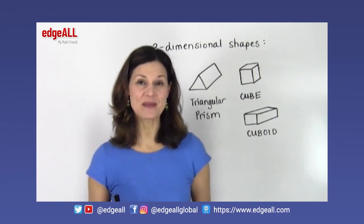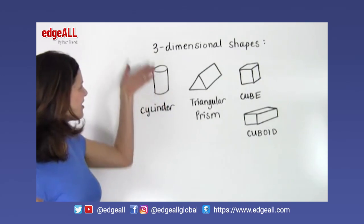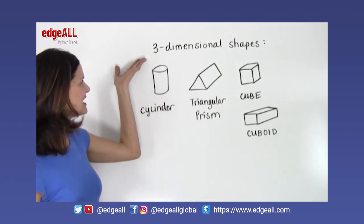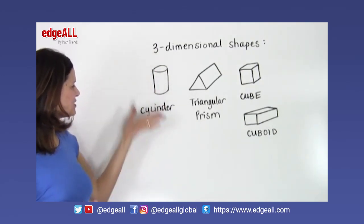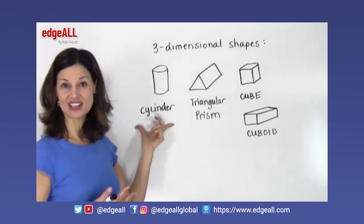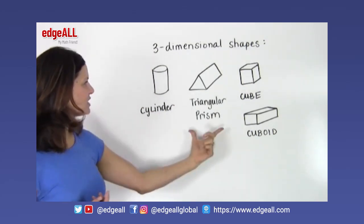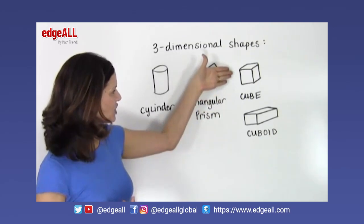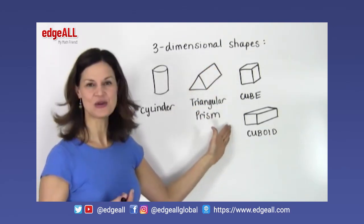Some examples of three-dimensional shapes are here on the board behind me. Some of our three-dimensional shapes would be a cylinder, for example, a triangular prism, a cube, or a cuboid.